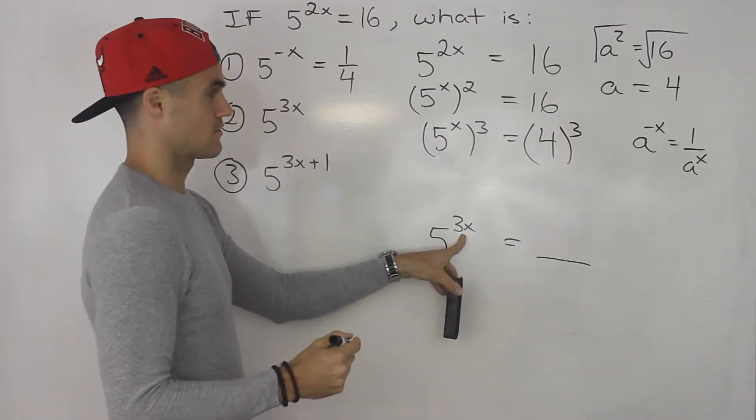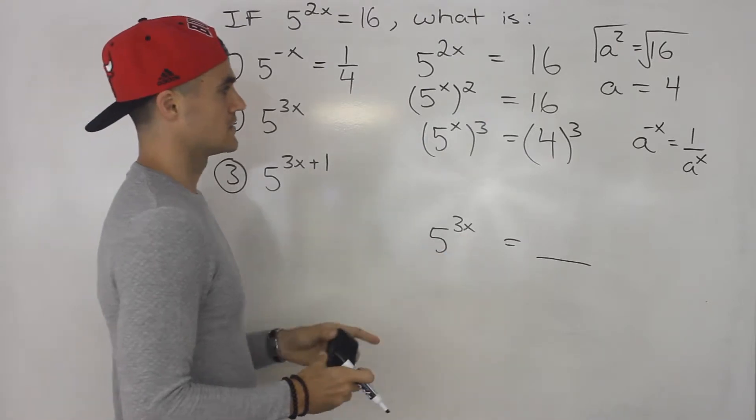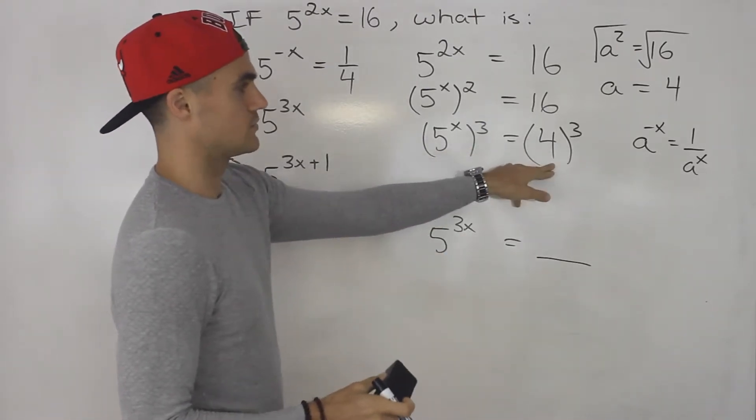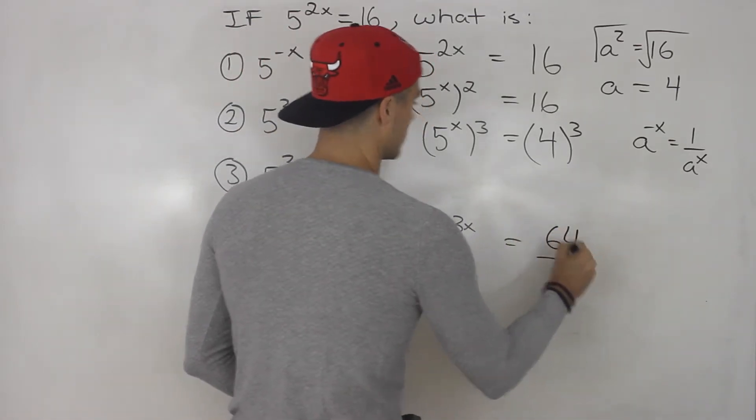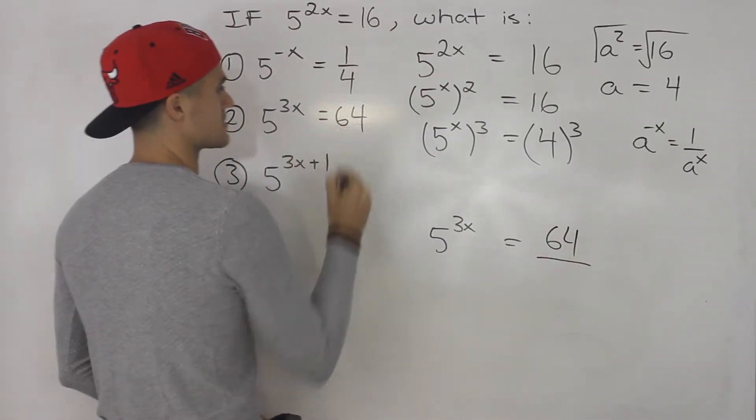So what we do to one side, got to do to the other. So 4 to the power of 3, that gives us 64. So this would equal 64.